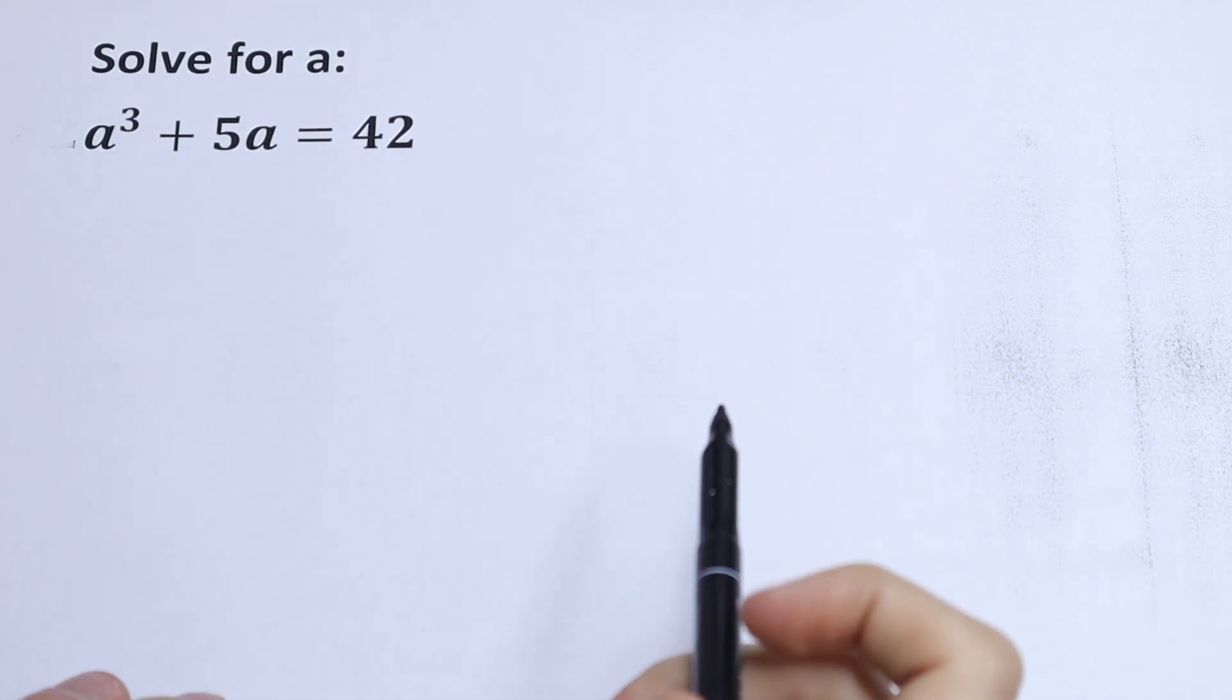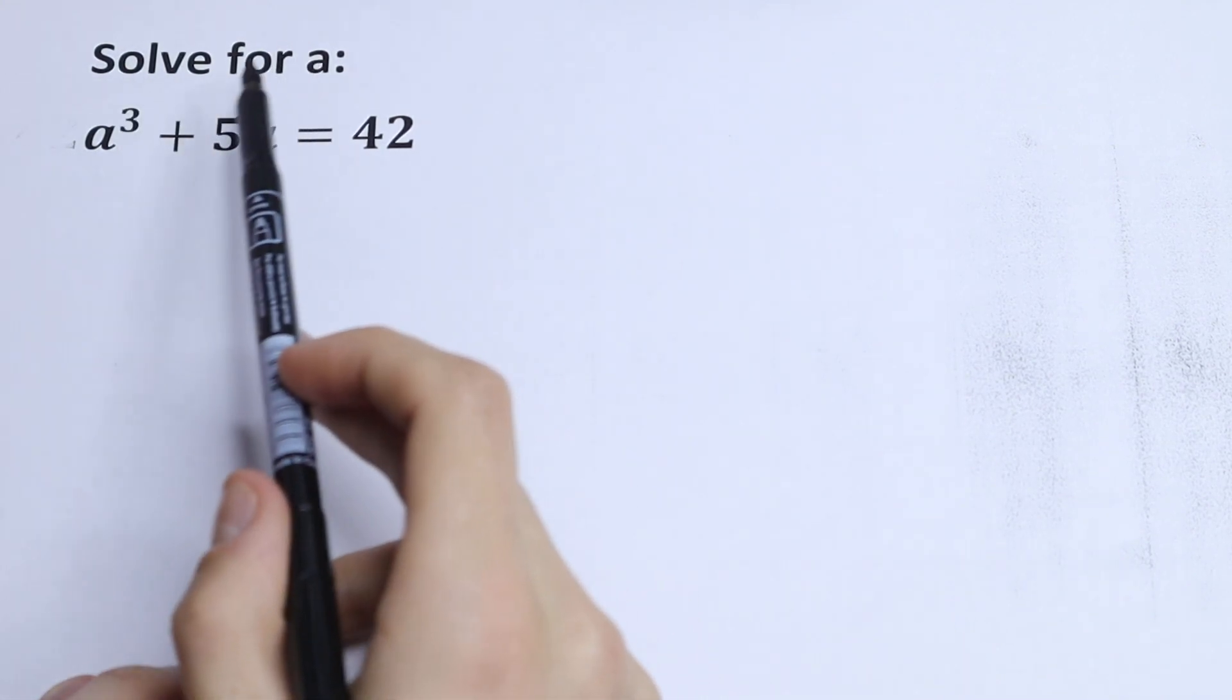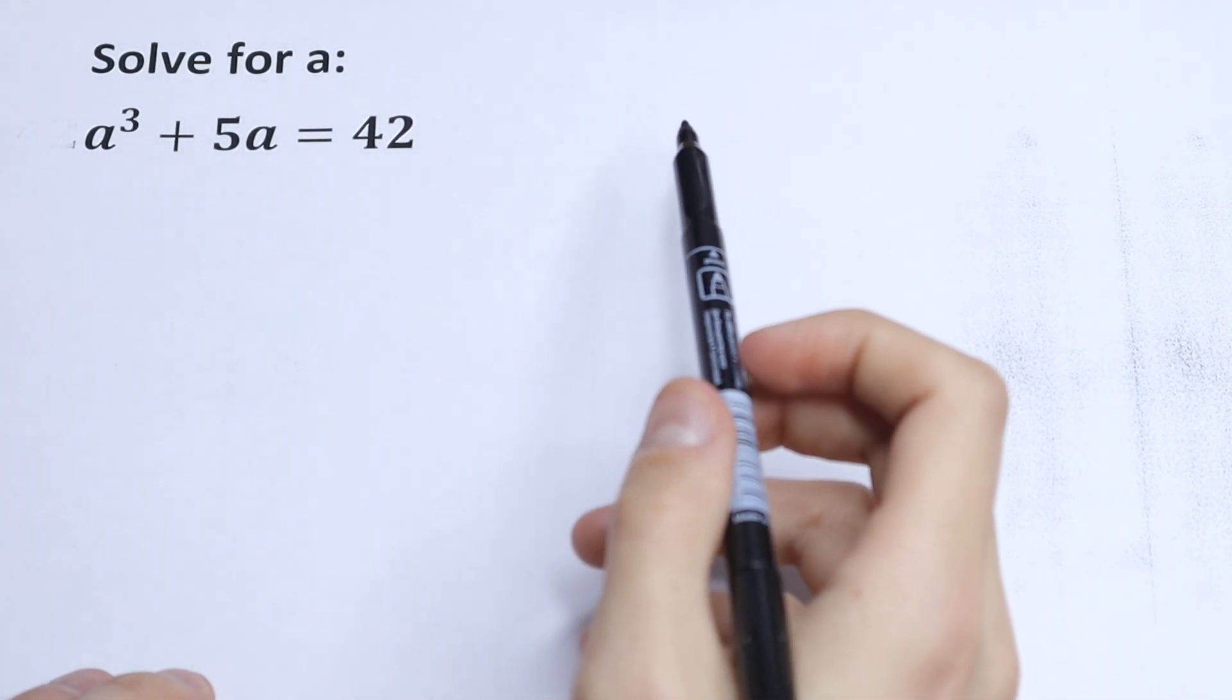Hello everyone, welcome back to MathMode. Here we have an interesting algebra problem. We need to solve for a, a³ plus 5a equal to 42.